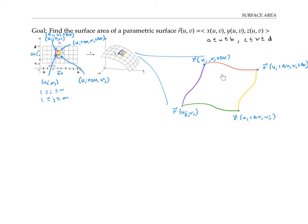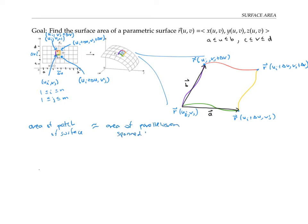Now I want to find the area of this patch of surface. It's going to be a lot easier to find the area of the parallelogram that approximates the patch of surface — the parallelogram spanned by two vectors. I'll call these vectors a and b, and write that the area of the patch is approximately the area of the parallelogram spanned by a and b.